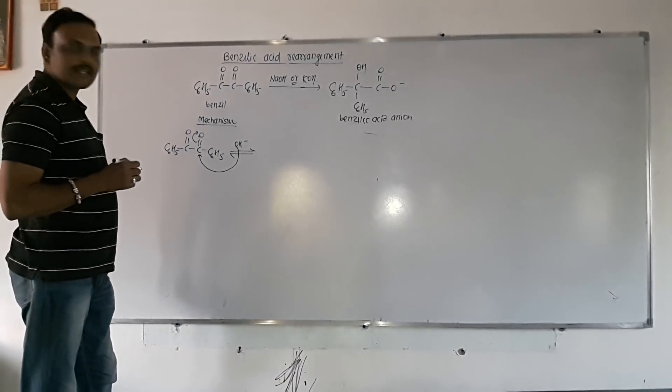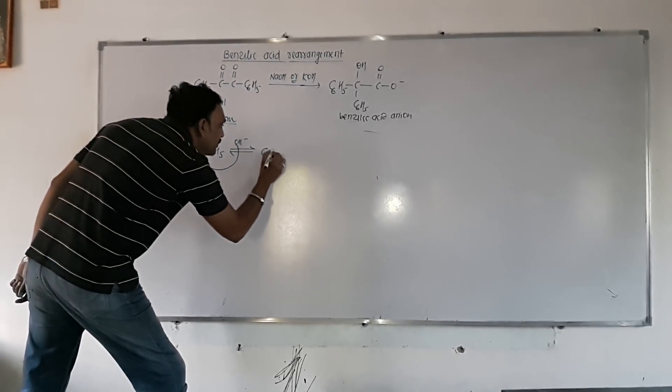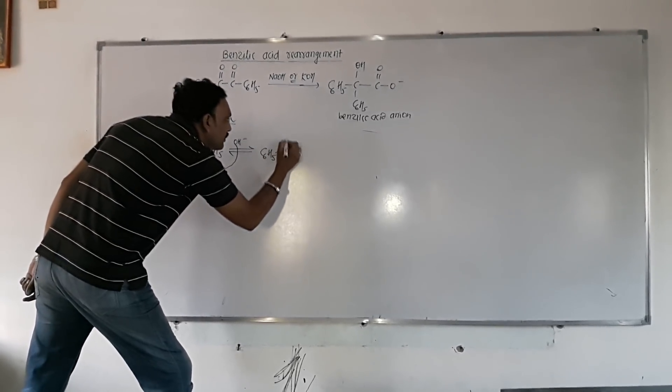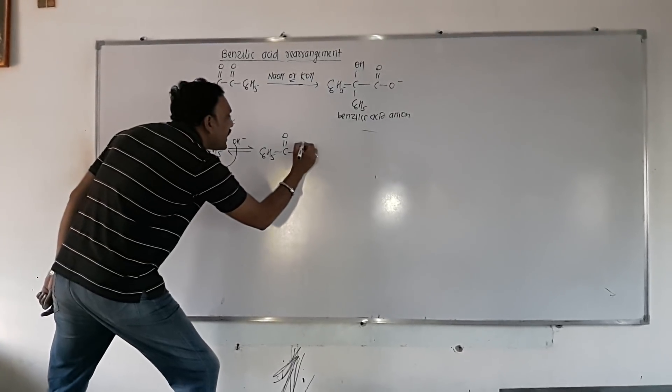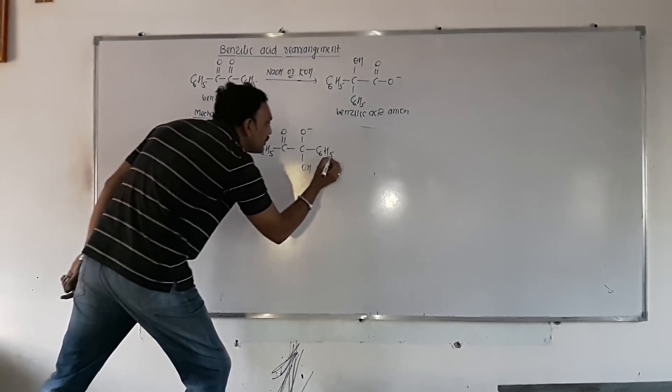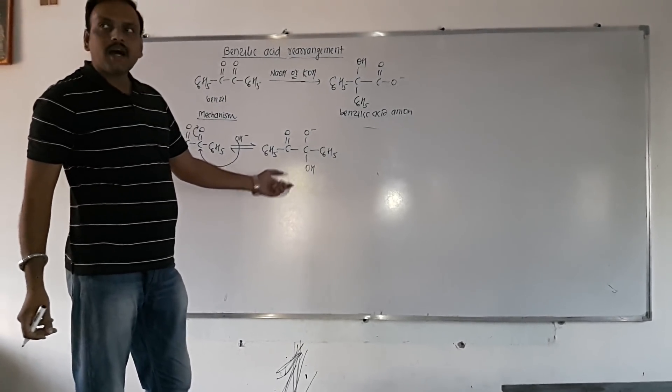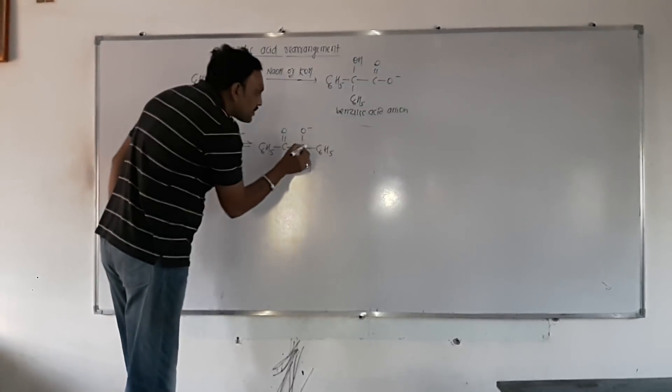So, this leads to the formation of an intermediate, which can be represented as. Now, this intermediate, ultimately, in this case, what happens?